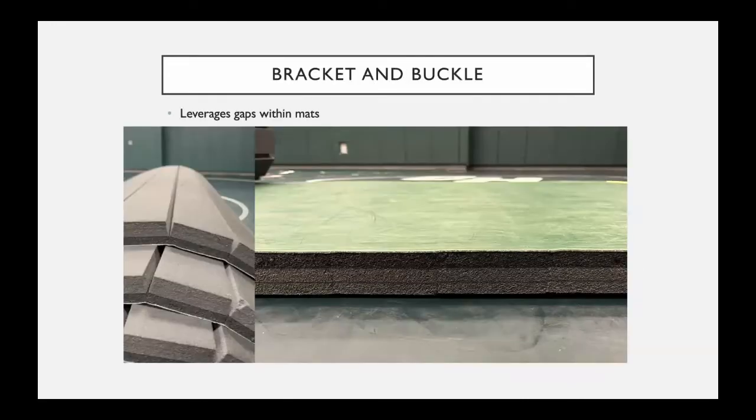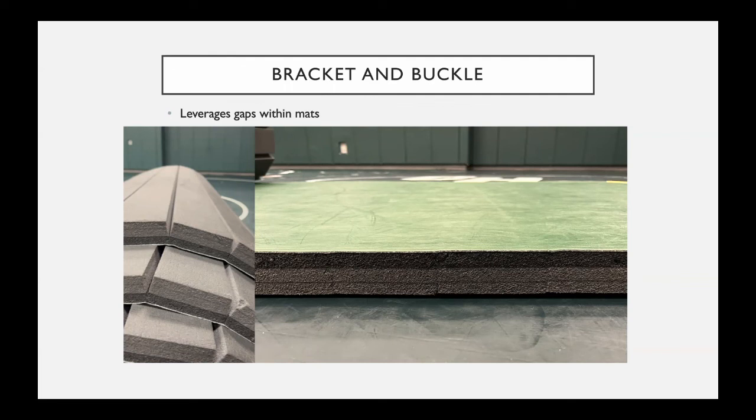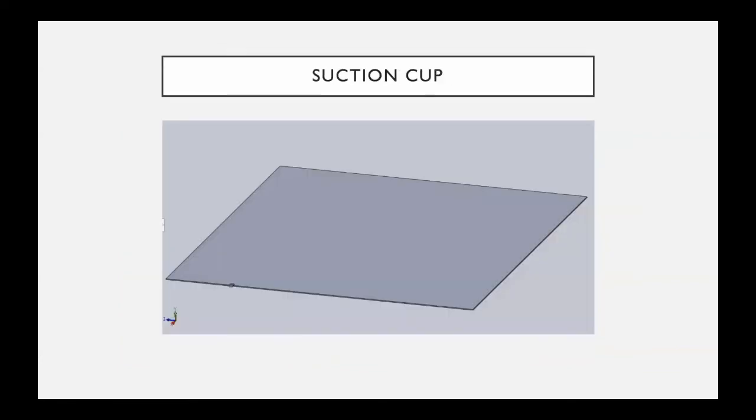The bracket and buckle will fit within the grooves in the wrestling mat. As you can see on the left, when the mat is rolled up, these grooves are exposed and you can see the gaps. However, on the right, when the mat is laid out flat, you can't quite see them. This bracket will fit in there, the strap will run through and connect, and the suction cup will be used as well to create extra force.